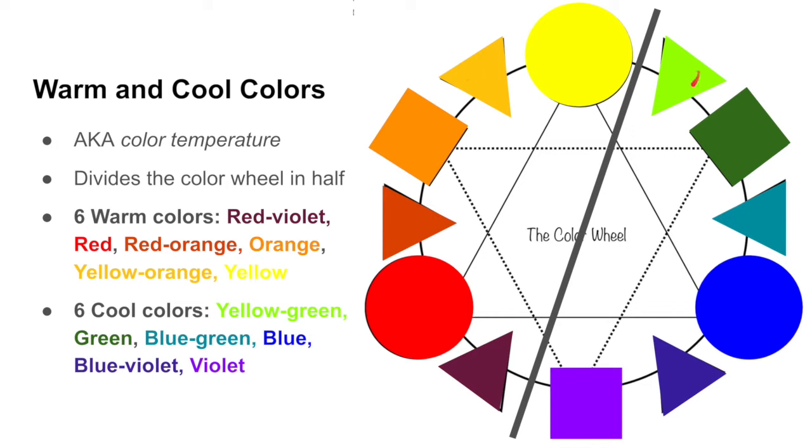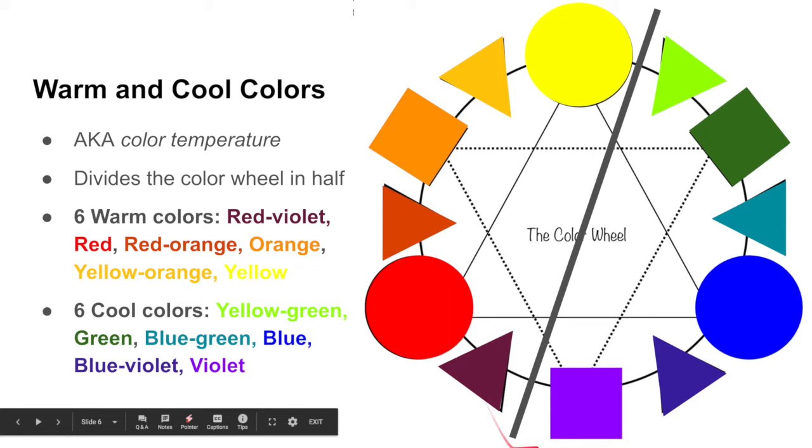And then our cool colors are yellow-green, green, blue-green, blue, blue-violet, and violet. So just always think to yourself like imagine things that are hot tend to be in this spectrum of colors. Things that are cool tend to be in this spectrum of colors. So just think about temperature when we talk about that.